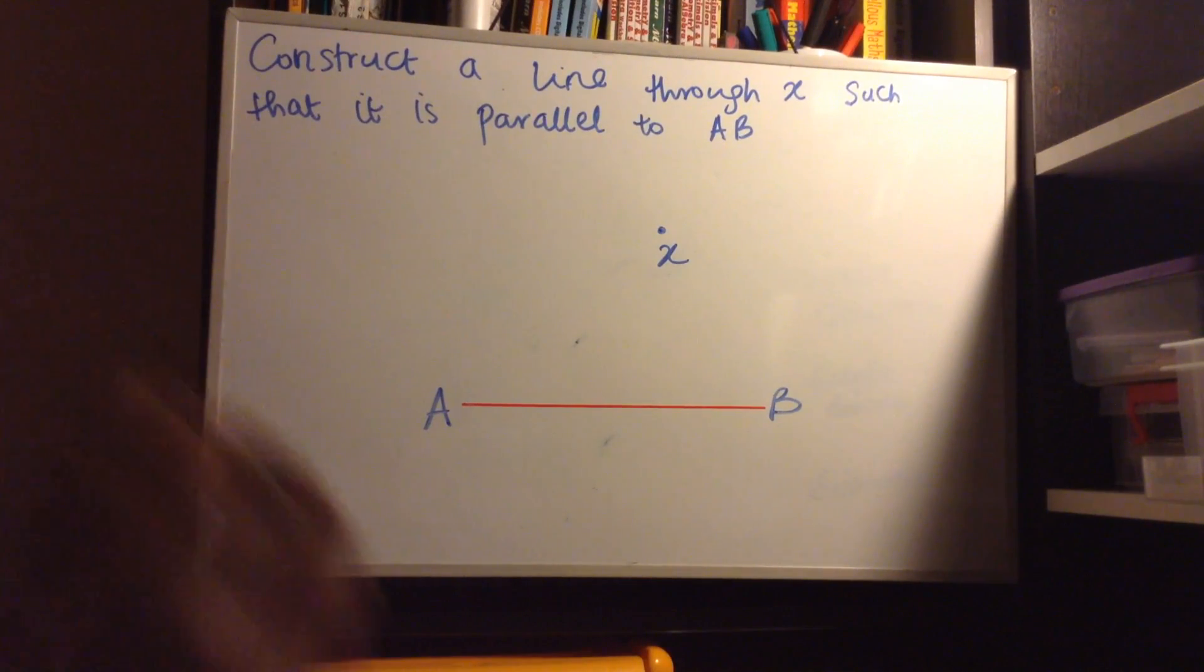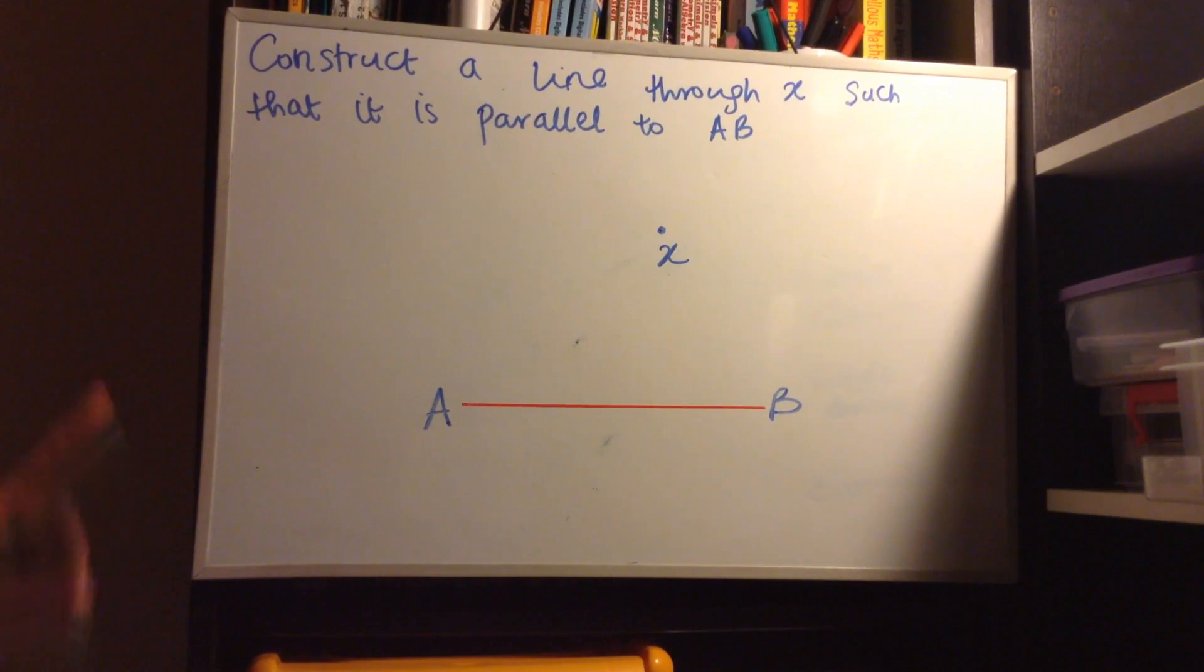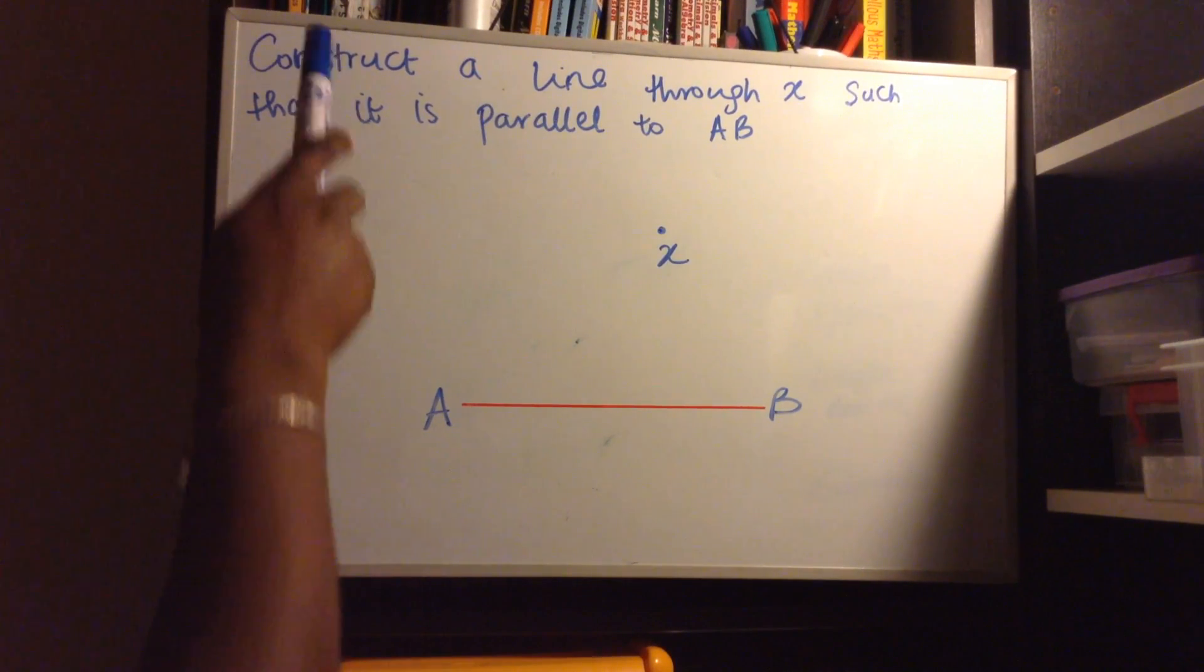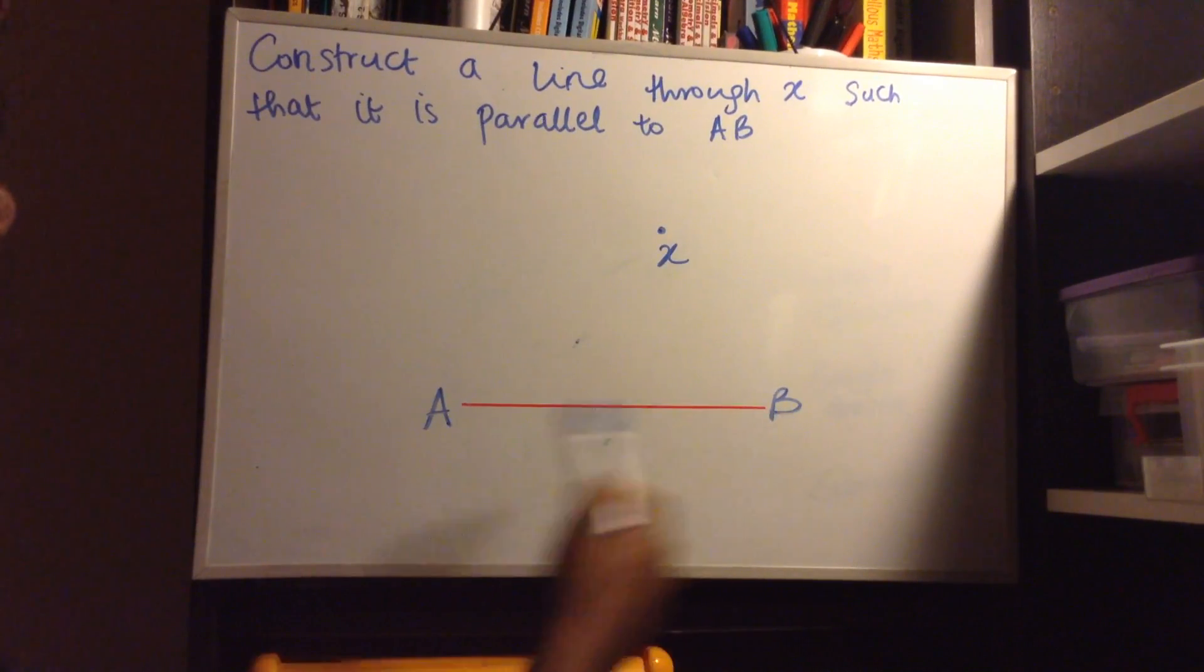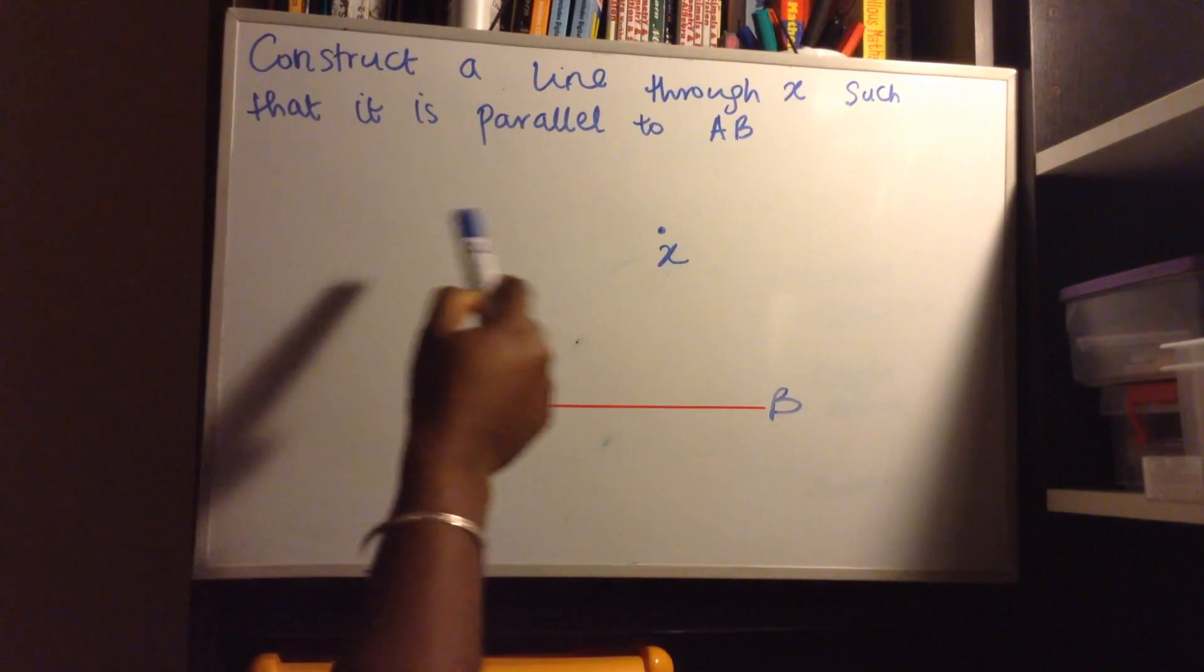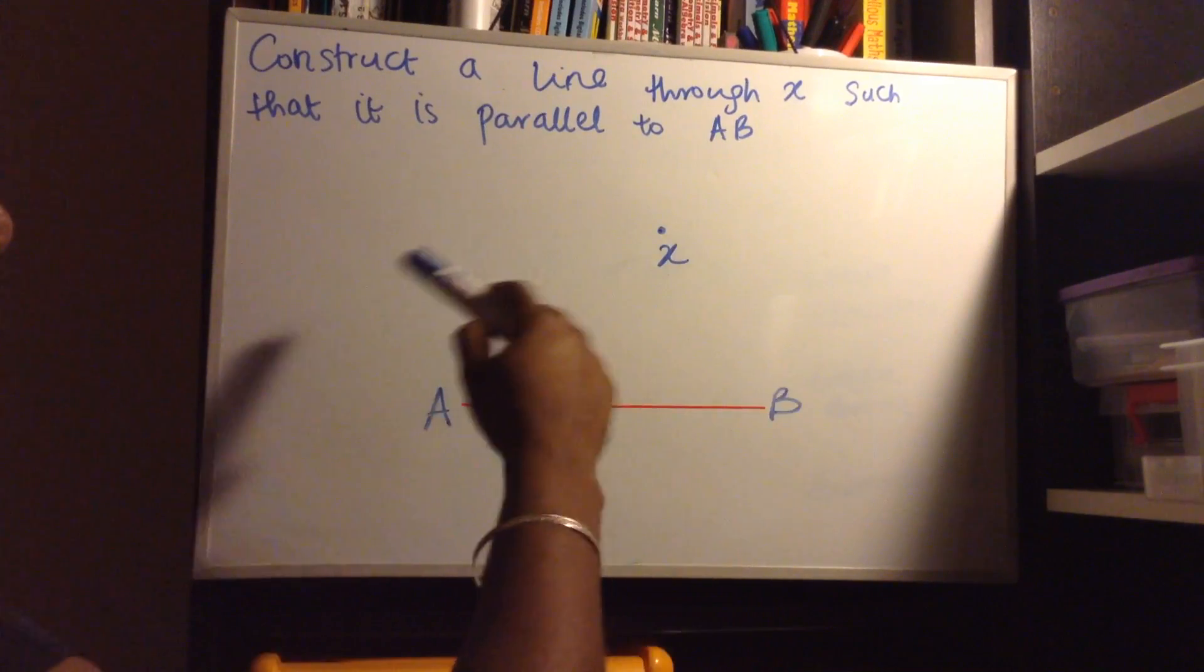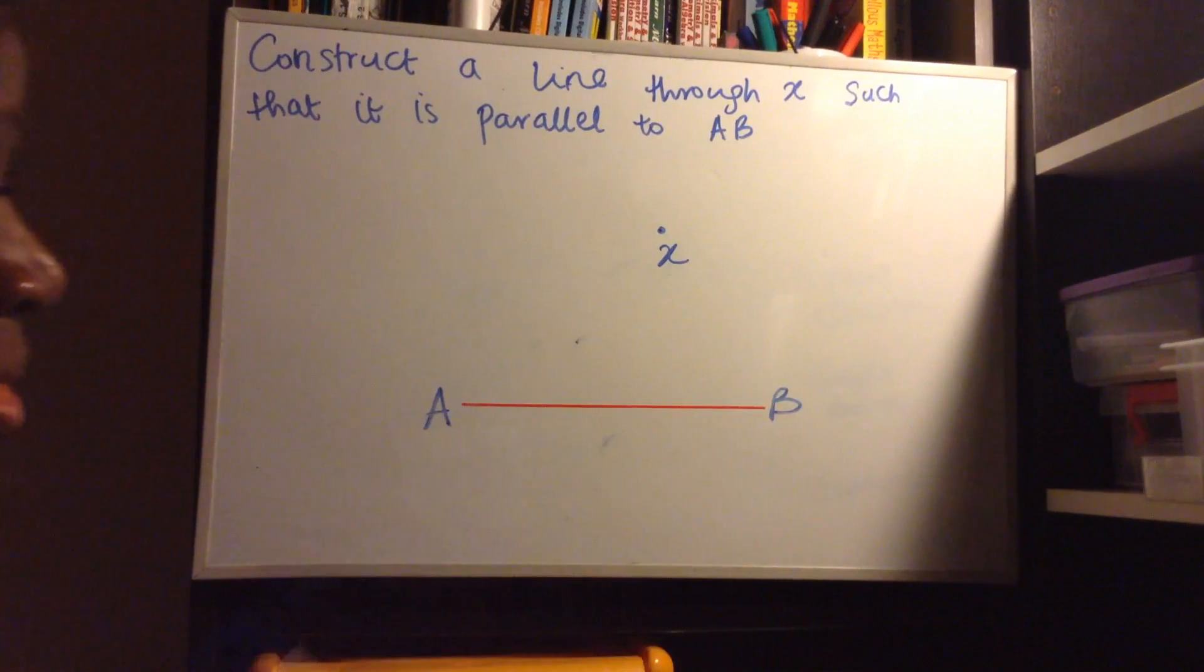Okay, so you might be given a line to draw another which is parallel to it, just like it says in the question. Construct a line through X such that it is parallel to AB. So we are given AB and we want to construct another line on X that is parallel to AB.